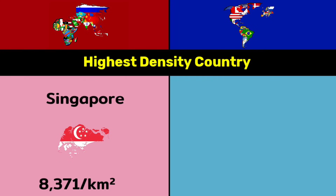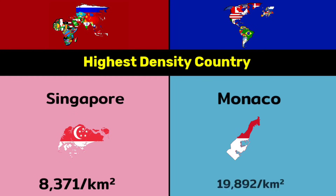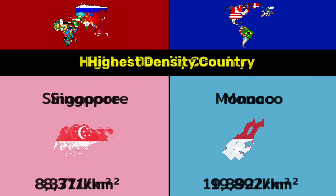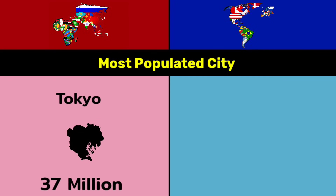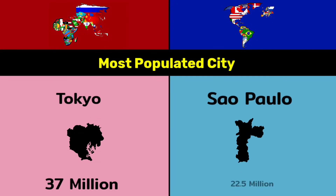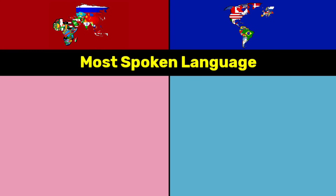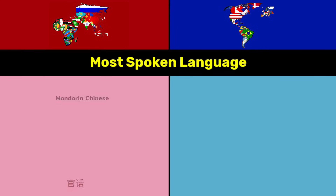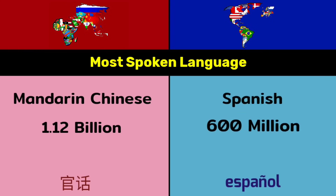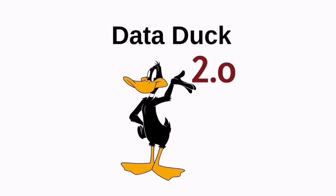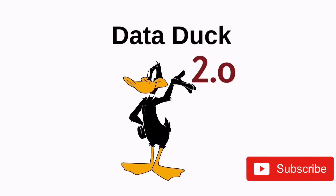Highest density countries: Singapore at 8,371 per square kilometer vs Monaco at 19,892 per square kilometer. Most populated city: Tokyo at 37 million vs São Paulo at 22.5 million. Most spoken language: Mandarin Chinese at 1.12 billion vs Spanish at 600 million. Thanks for watching — please subscribe to our YouTube channel.